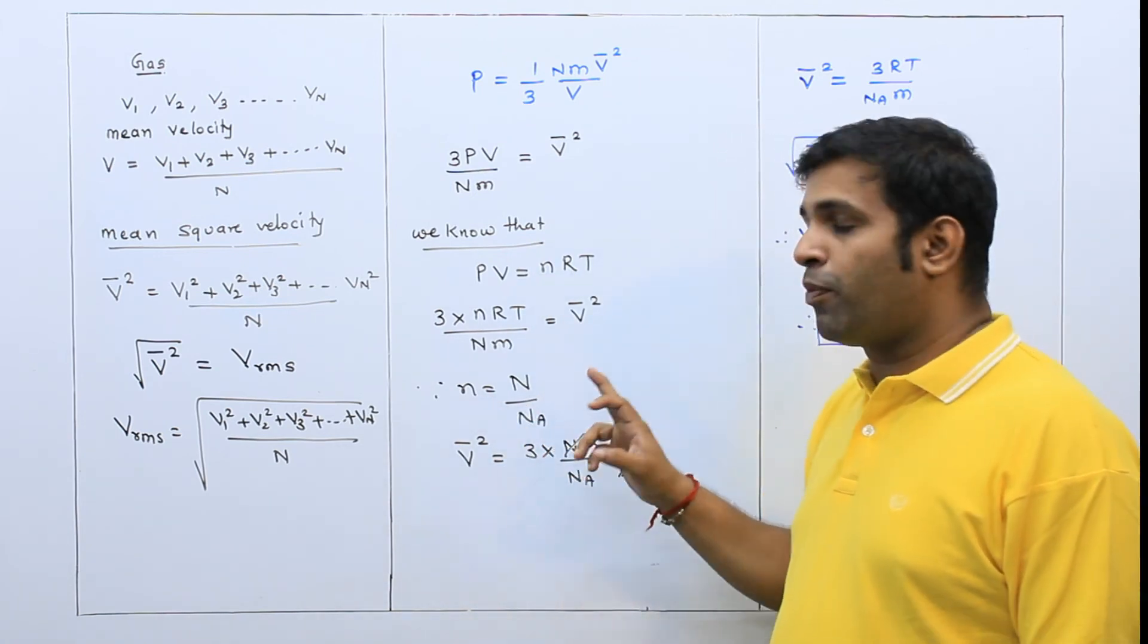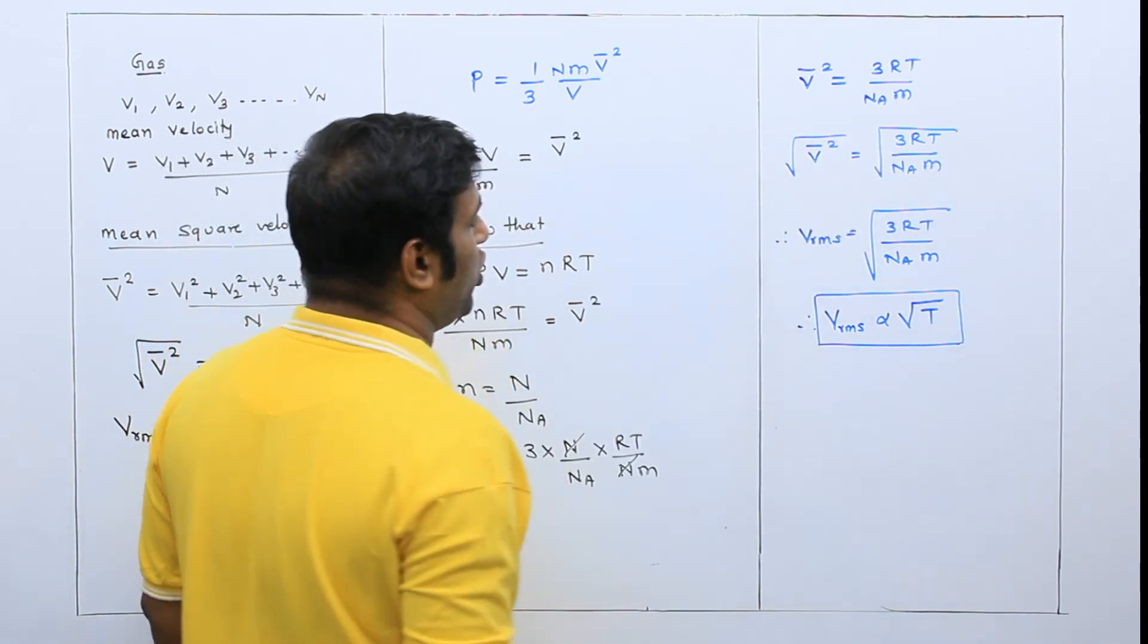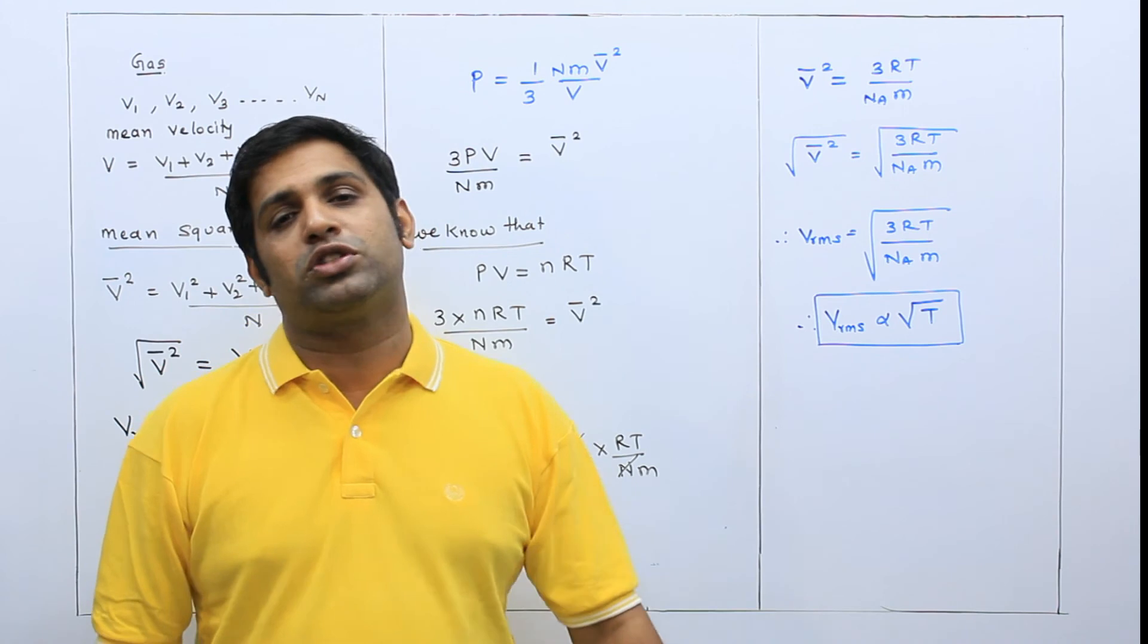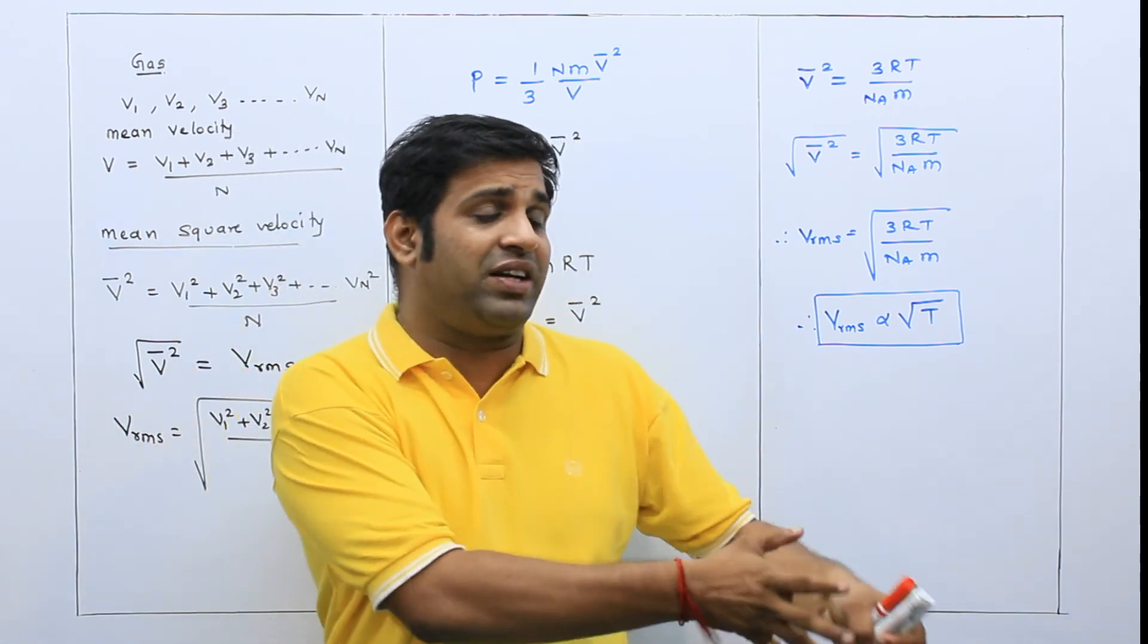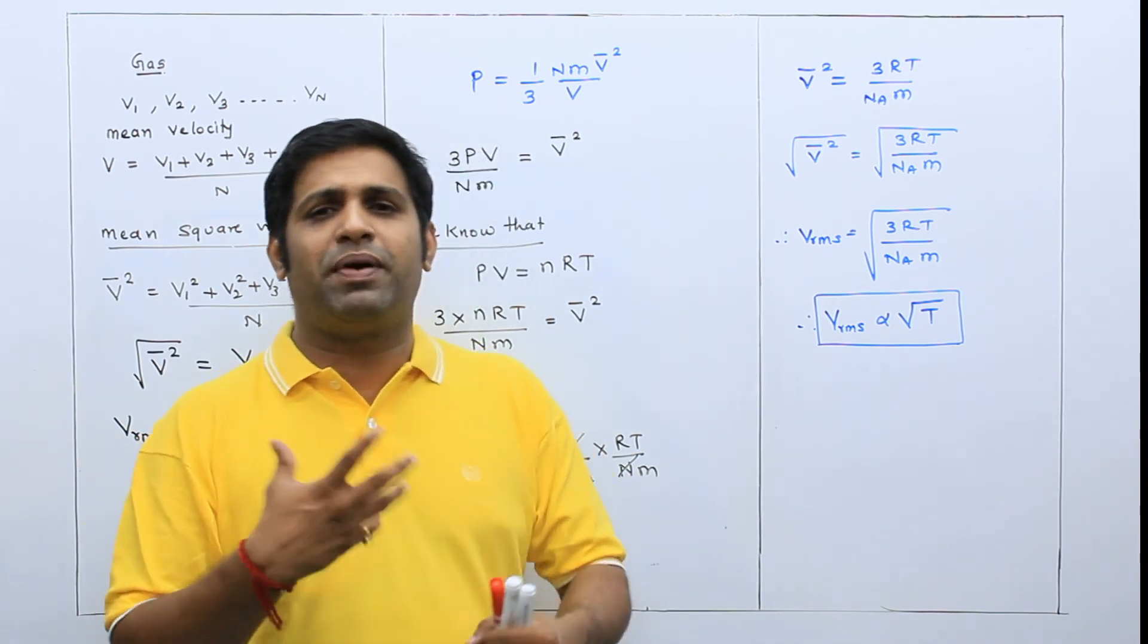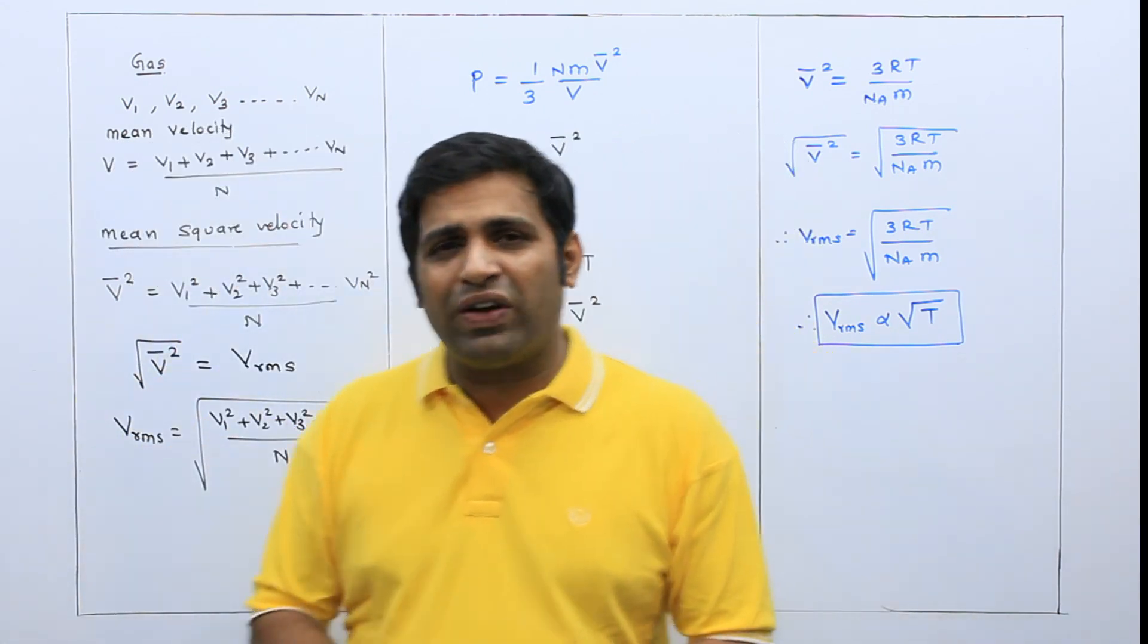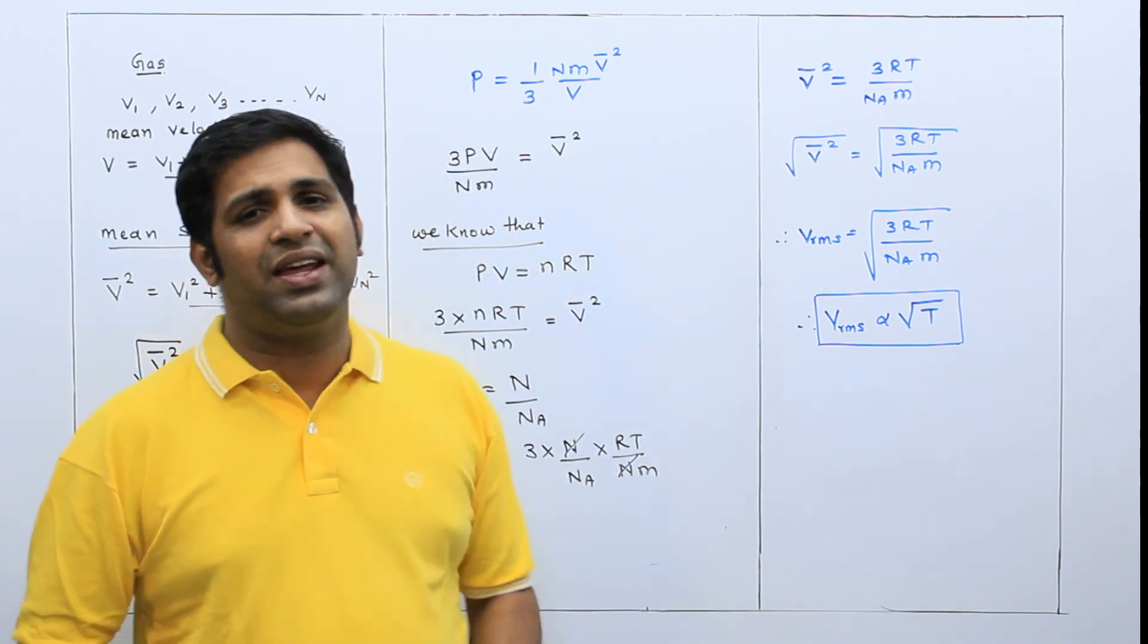Number of molecules upon Avogadro's number. So I substituted this value also. What we have concluded, so now you talk about how temperature affects RMS velocity, how temperature affects the speed of the gas.